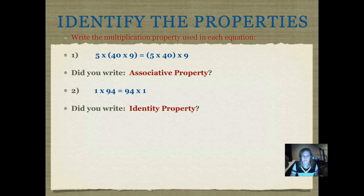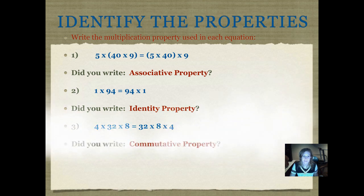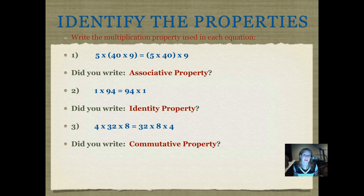Number three: 4 times 32 times 8 equals 32 times 8 times 4. What multiplication property was used here? Pause it and push play when you're ready. Did you write commutative property? In my head I was saying 'commove' to remind me that this is the property where I can move the numbers around to make multiplication easier. On the left side of the equal sign, we wrote 4 times 32 times 8, but on the right side we totally moved them around and wrote 32 times 8 times 4. That's the commutative property.